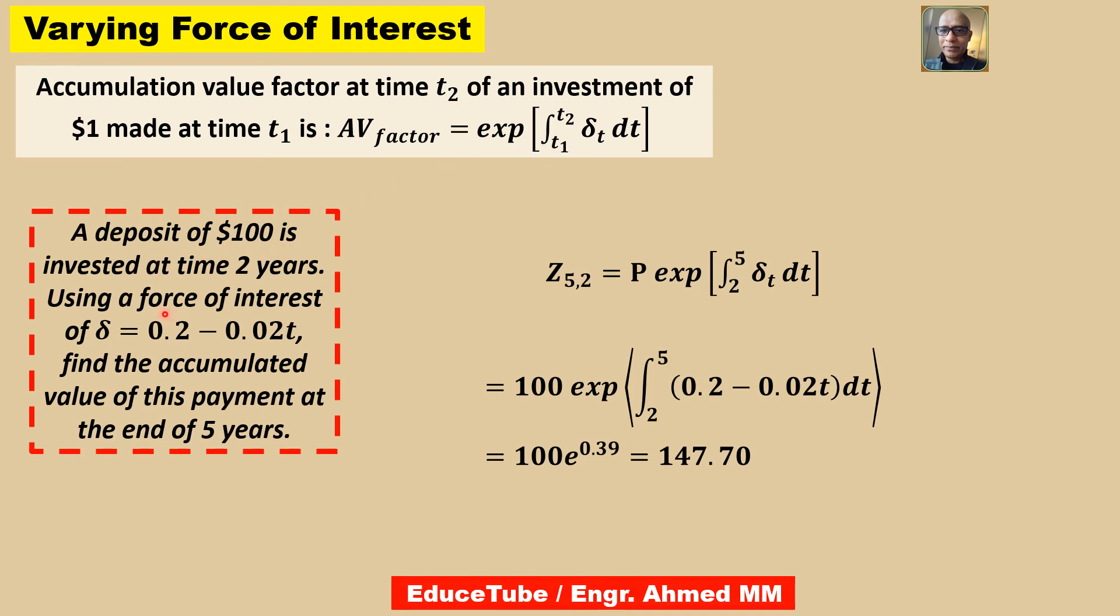A deposit of $100 is invested at time 2 years, using a force of interest of δ = 0.2 - 0.02t. Find the accumulated value of this payment at the end of 5 years. So here, accumulated value at the end of 5 years. Start invested at time 2 years. So it is 2 to 5. That is why in this expression, in this formula, accumulation value factor, we have to multiply it by P, the principal value, principal amount, to get the accumulated value.